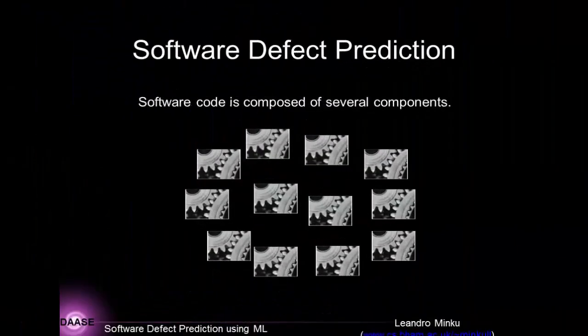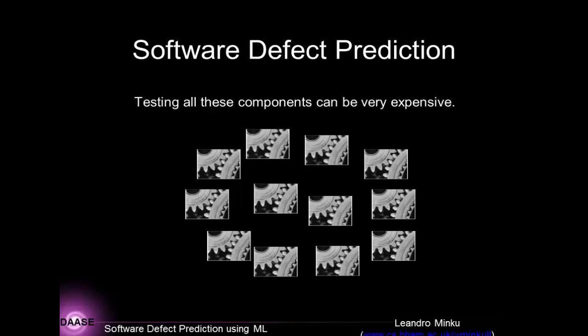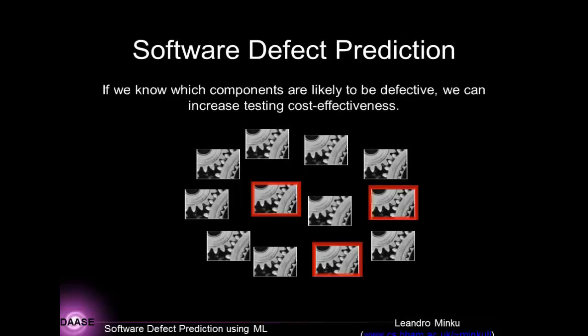I'm going to talk about automated software defect prediction using machine learning. What is software defect prediction? Software is composed of several components — for example, several different classes or several different methods. Testing all these components can be quite expensive. If we know beforehand which components are more likely to contain defects, we can concentrate more of our testing on these components and increase testing cost-effectiveness.